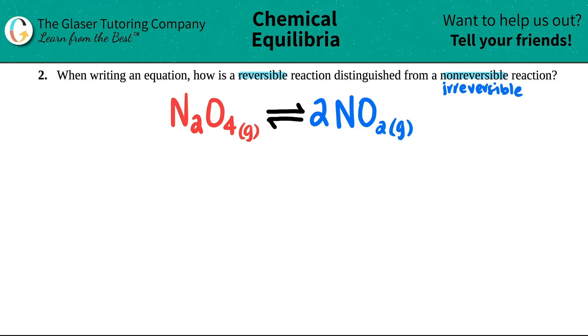How do we distinguish it? It's this sign right here. Reversible reactions have this double sign. This is a pure reversible reaction. I have the double sign.